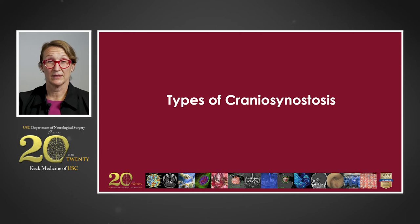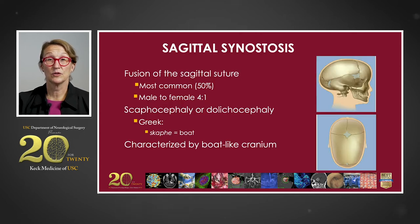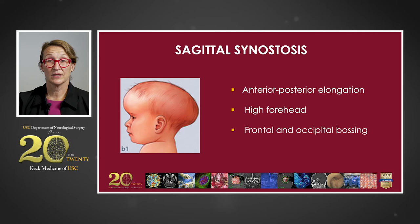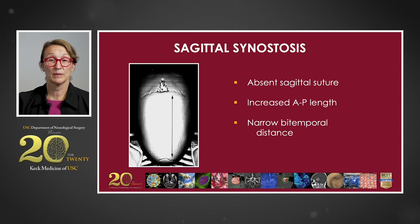Sagittal synostosis is fusion of the sagittal suture which runs along the midline of the skull. This is the most common type of craniosynostosis and occurs most commonly in males compared to females at a four to one ratio. This is often described as scaphocephaly or dolicocephaly, which comes from the Greek word 'scaph' meaning boat, characterized by a boat-like cranium. Sagittal synostosis typically shows an exaggerated anterior-posterior elongation of the skull, a high forehead, as well as frontal and occipital bossing. On imaging, you see an absent sagittal suture, increased AP length, and narrow bitemporal distance. The picture demonstrates a 3D CT reconstruction showing complete fusion of the sagittal suture.